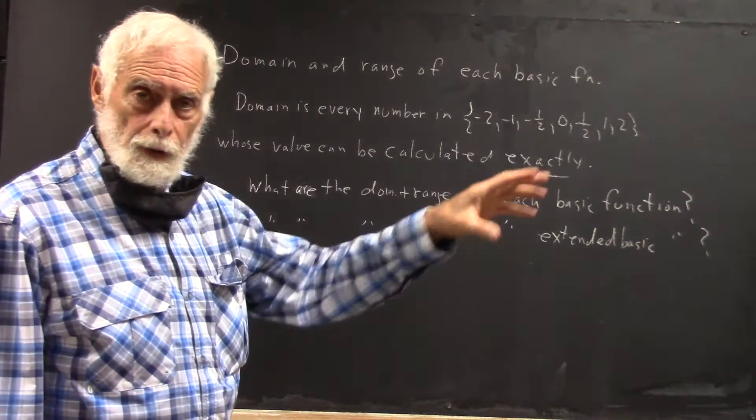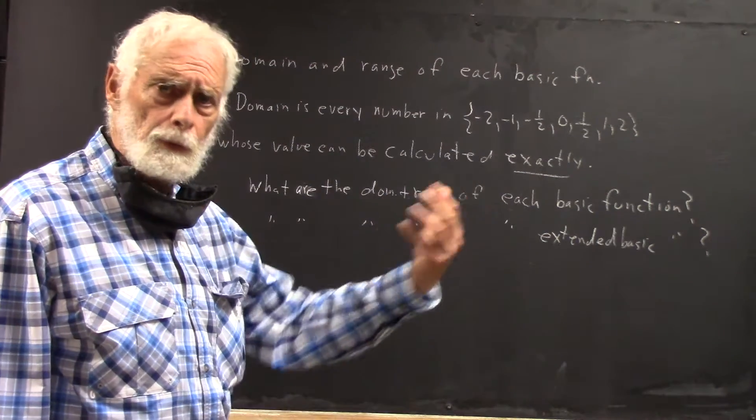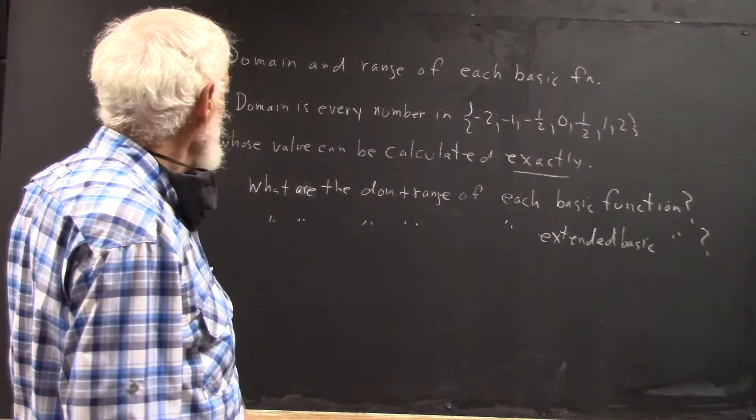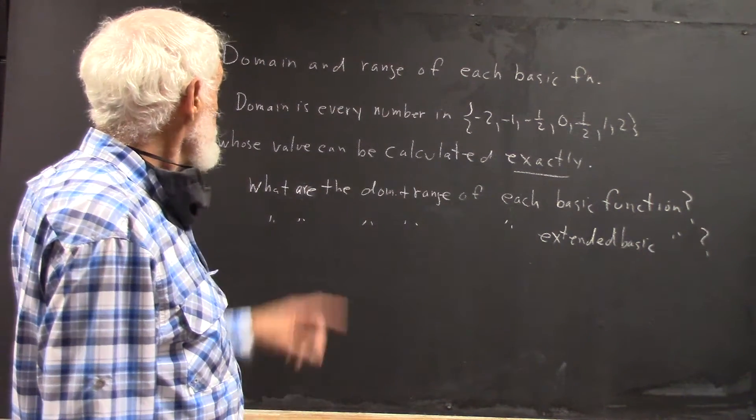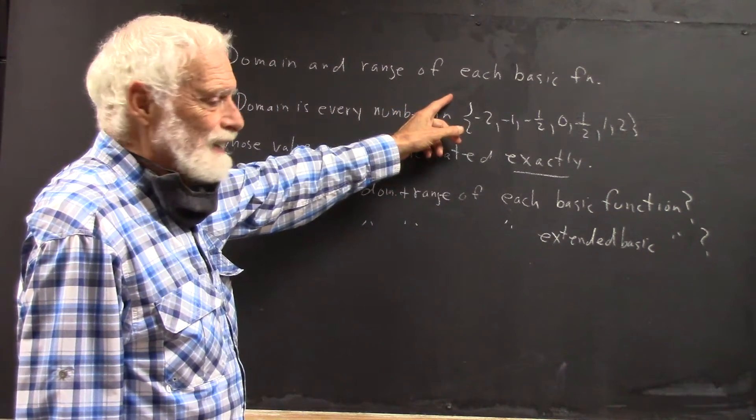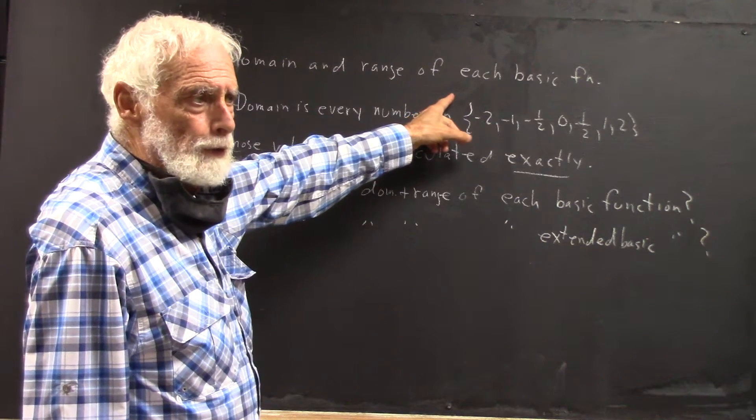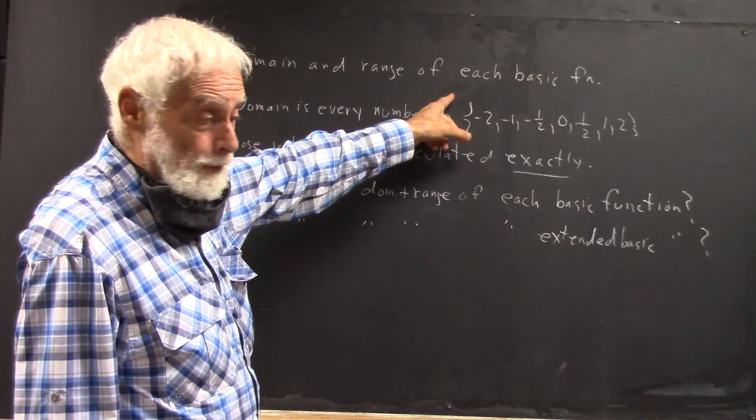And we demonstrated, I think, the squaring function last time, or maybe it was a reciprocal square function. I believe it was a reciprocal square. So I asked people to write down what they think the domain and range of each basic function is.